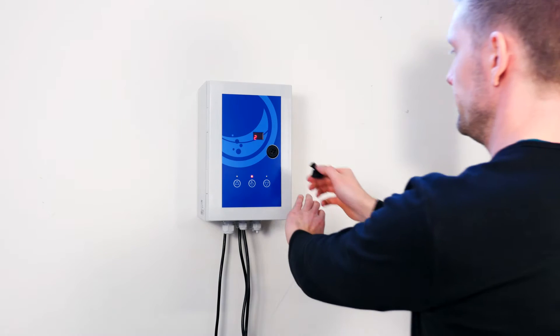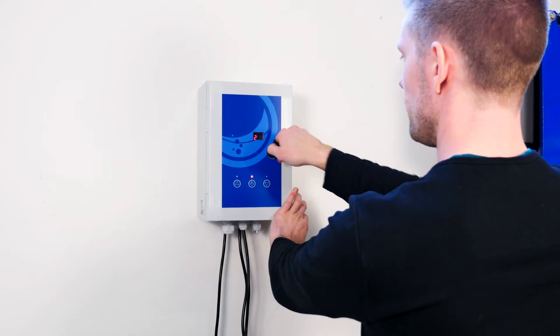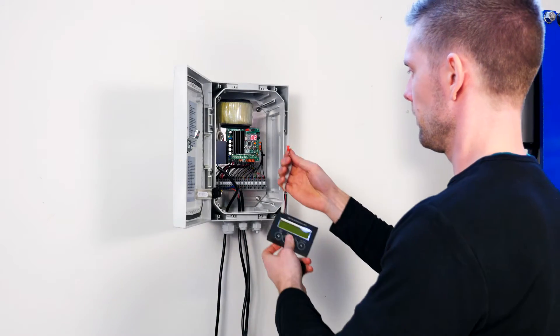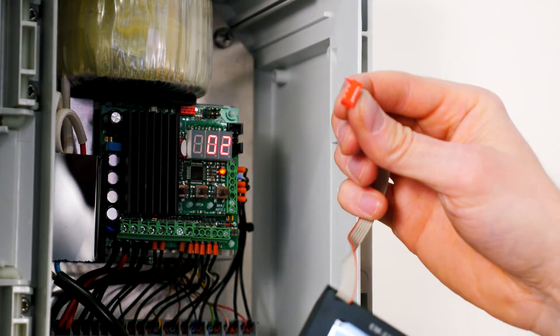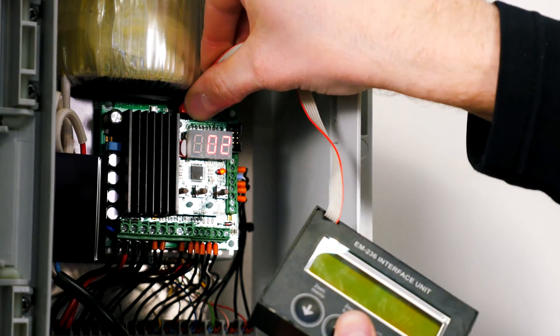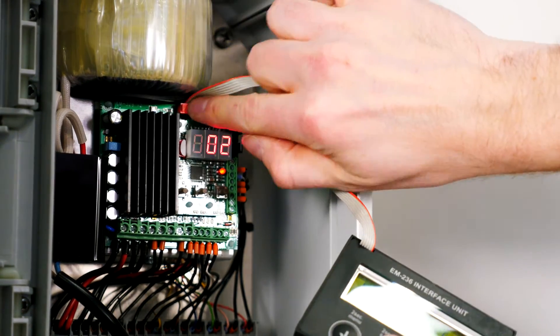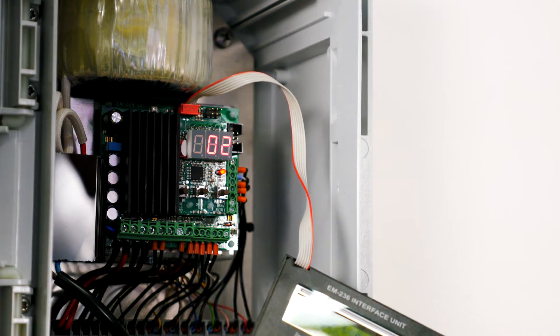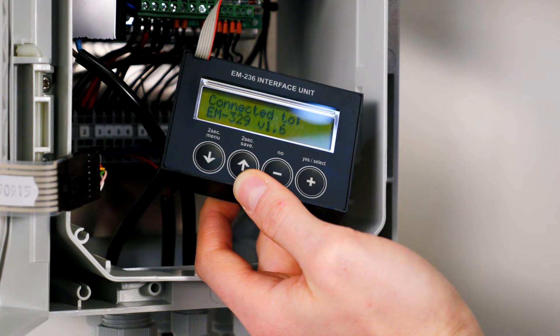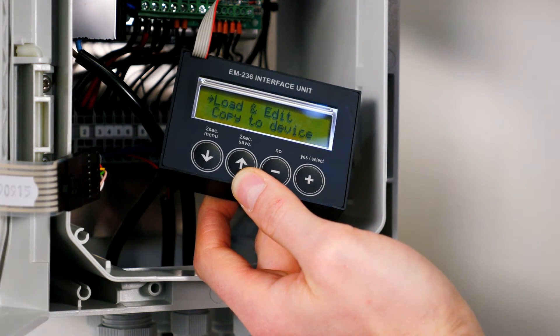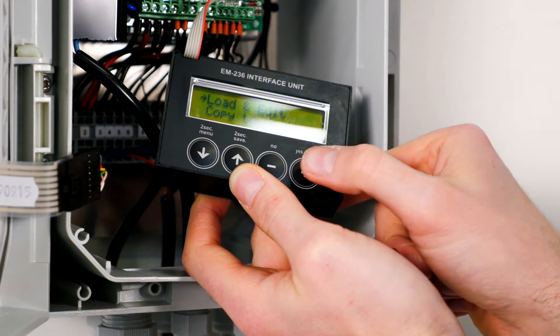Start by mounting the TR-EM236 programming module. This is done by opening the cover of the WCU, then mount the red plug in the counterpart, which is placed on the PCB up against the transformer. The programming module now writes connected to EM329, which is the WCU PCB.